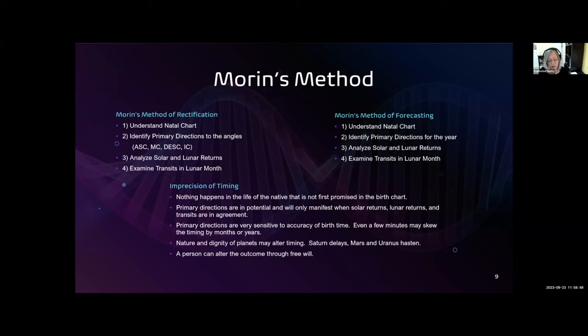I'm going to demonstrate using Moran's method, a structured way that primary directions were used during the Renaissance era. A key point in traditional astrology is that nothing can happen in a person's life that is not reflected in the natal chart. So we start by understanding the natal chart. The next step is to find the primary directions and then looking at the solar return. If the solar return and the primary directions agree, then the event is more certain to happen.